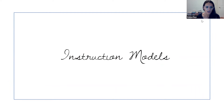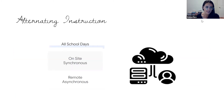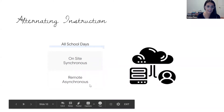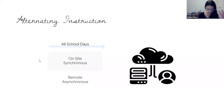The other basics I want to cover are instructional models when we're talking about hybrid learning specifically. The first type I would consider alternating instruction, meaning your students are alternating — engaging in a synchronous lesson and an asynchronous lesson depending on which days they are in the school building. So if you have an A and B group, group A, if they're in the building, are doing the synchronous lesson with you in the classroom, whereas group B would have an asynchronous lesson posted for that day, working through it independently from home. Then the next day you flip — group B would do synchronous, group A would do asynchronous, and so on.